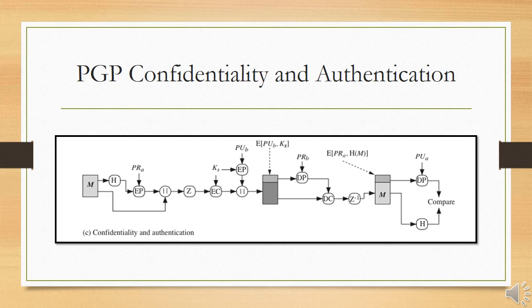This sequence is preferable to encrypting the message first and then generating a signature for the encrypted message. It is generally more convenient to store a signature with the plaintext version of a message. For purposes of third-party verification, if the signature is performed first, a third party need not be concerned with the symmetric key when verifying the signature. In summary, when both services are used, the sender first signs the message with their own private key, then encrypts the message with a session key, and finally encrypts the session key with the recipient's public key.